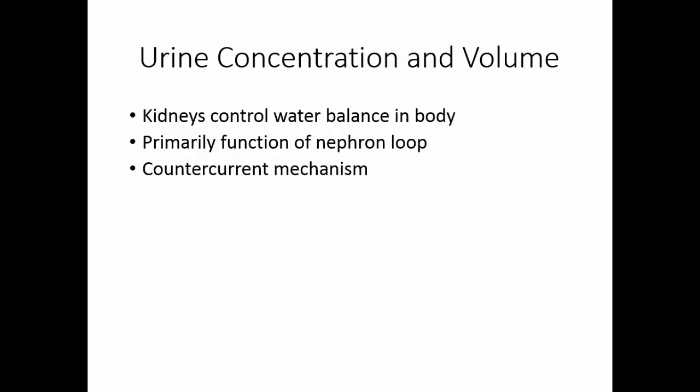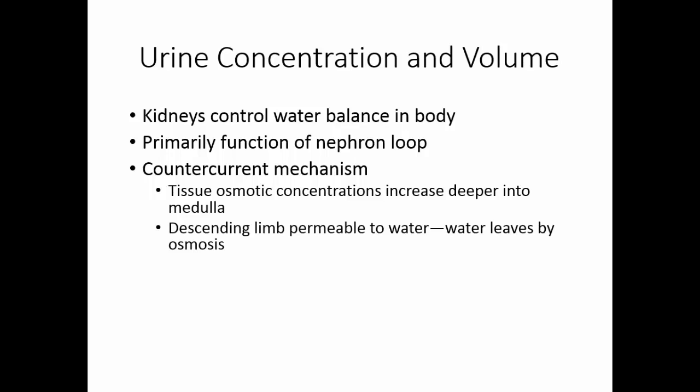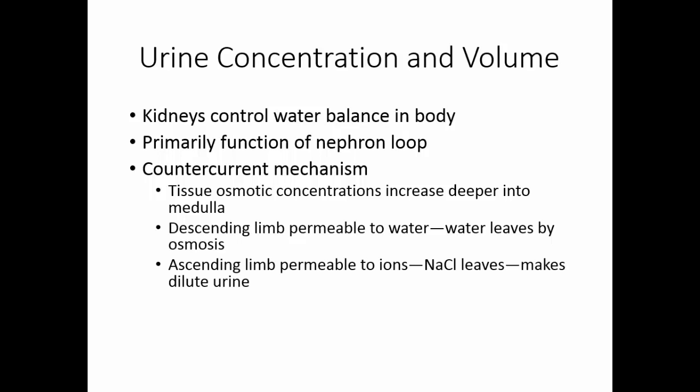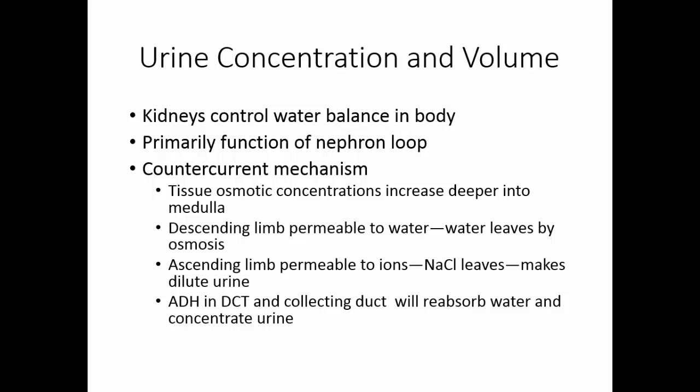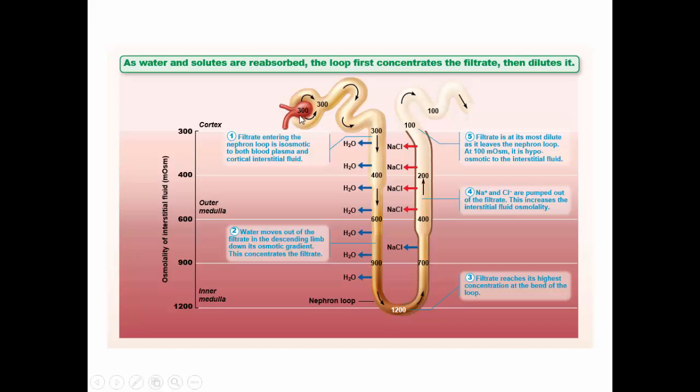They use something called a counter-current mechanism. The tissue osmotic concentration increases the deeper into the medulla of the kidney that you go. The descending limb of the loop of Henle is permeable to water, so as we go into more concentrated areas, water leaves by osmosis. The ascending limb is permeable only to ions, so as we go up into less concentrated areas, sodium and chloride will leave and go into the tissue. Antidiuretic hormone has an effect on water reabsorption in the distal convoluted tubule and primarily in the collecting duct. The osmolality of blood is about 300 milliosmol.